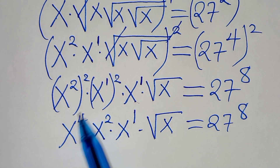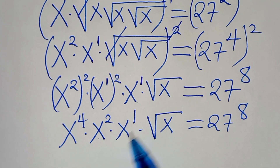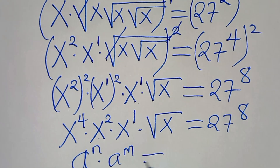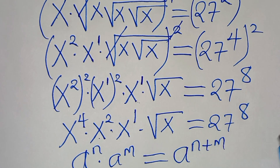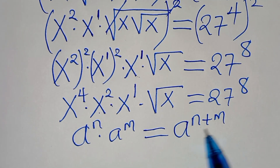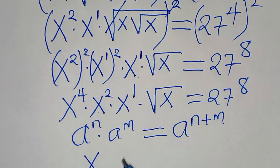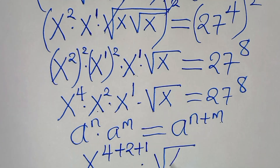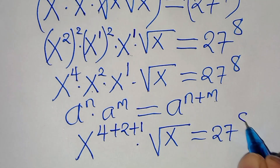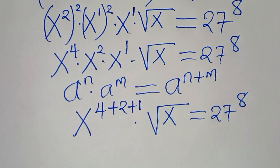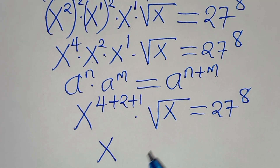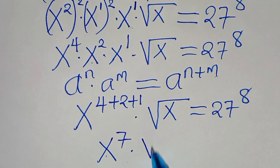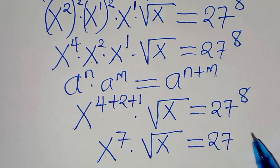The next step: x to the power of 4 times x to the power of 2 times x to the power of 1. This is in the form a^n · a^m = a^(n+m). Applying this exponent property, we have x raised to the power of 4 plus 2 plus 1, multiplied by the square root of x, equal to 27 to the power of 8. So this is x to the power of 7 times the square root of x, equal to 27 to the power of 8.